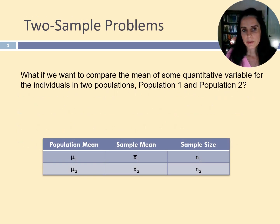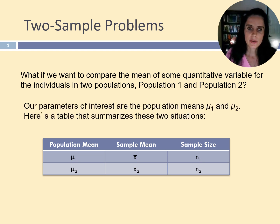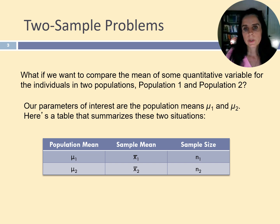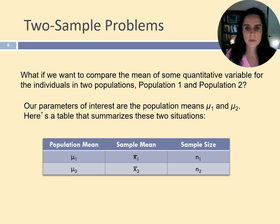In many situations, we want to compare two independent groups. With matched samples, we test the same individuals twice or we test pairs of individuals who are very similar in some respect, like twins for instance. When we work with independent samples, the two groups of individuals are randomly selected from two different populations. The term independent is used because individuals in one sample must be completely unrelated to the individuals in the other sample.